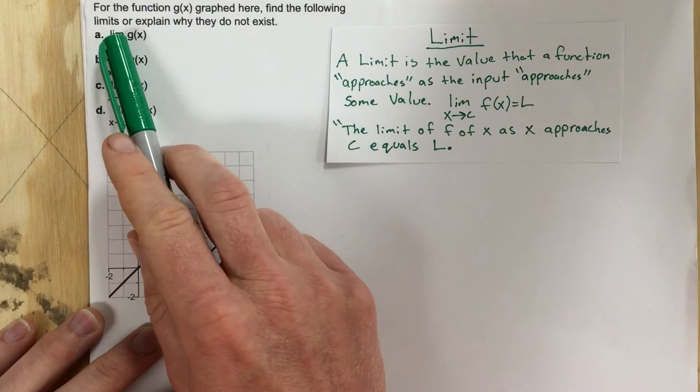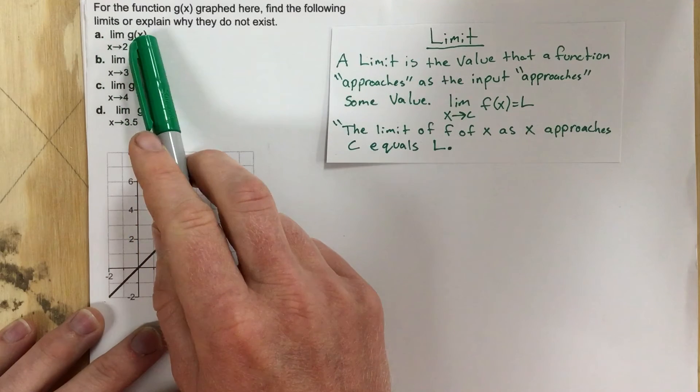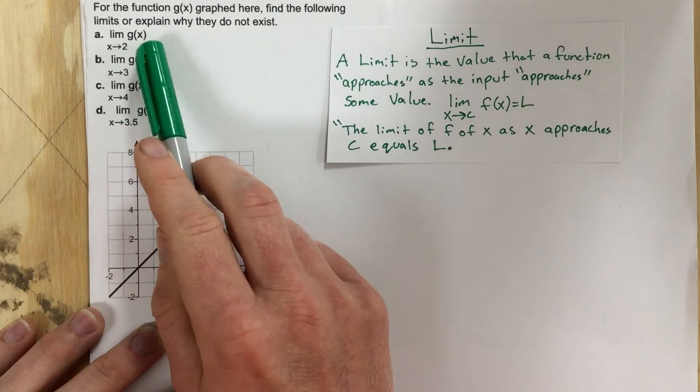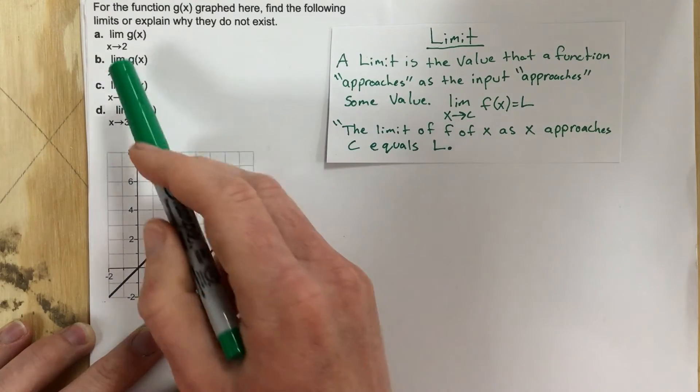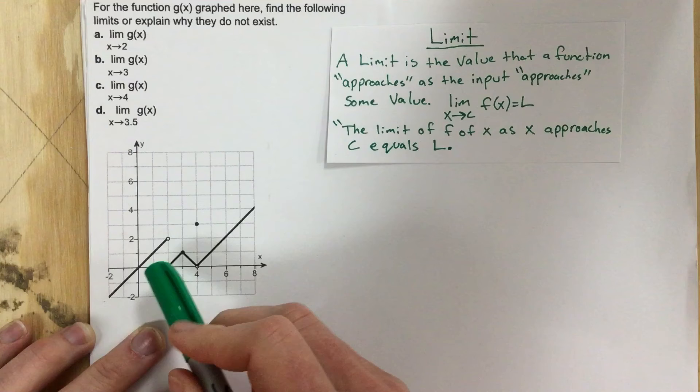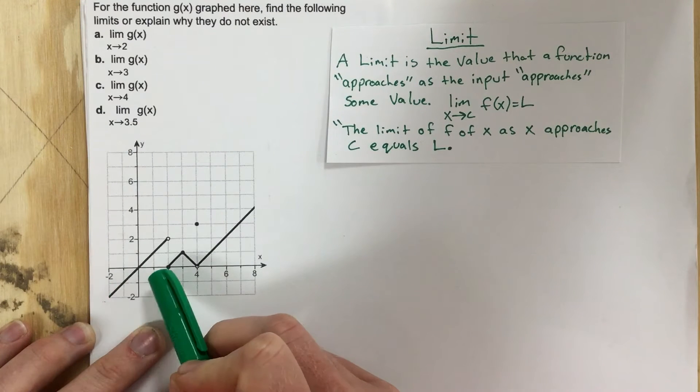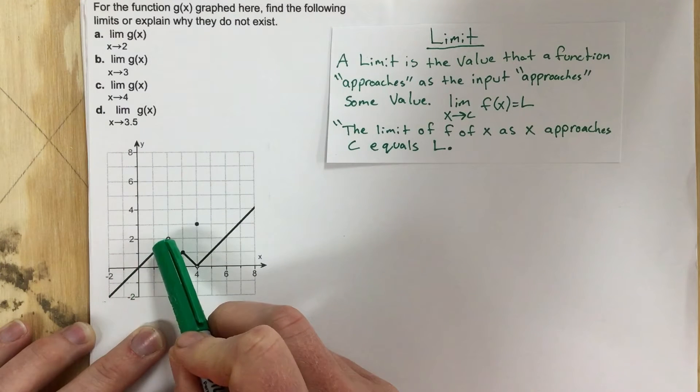So when we're reading this, we're saying the limit of g of x as x approaches 2 is what? If you look as we approach 2, as this function approaches an x value of 2, what's the value of the function?